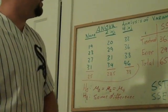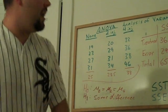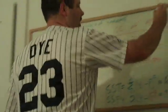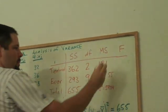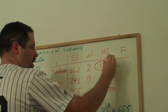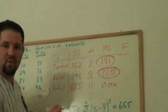And we can test this null hypothesis by computing an F statistic. That's why we have this column here. And this F statistic is just going to be the mean squared treatment divided by the mean squared error.